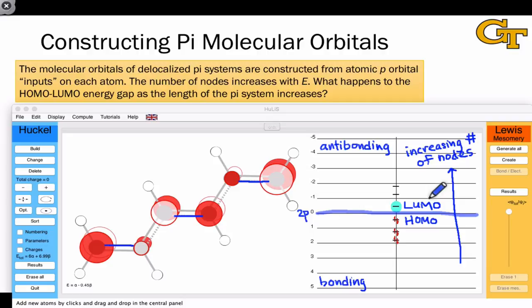The other thing we notice, as we move from 2 to 4 to 6 atom pi systems and beyond, is that this HOMO-LUMO energy gap, the gap between the highest filled orbital and the lowest empty orbital, is shrinking. This means it takes less energy to promote an electron from the HOMO to the LUMO, and ultimately this is the origin of the colors and electrical conductivity of long conjugated systems.